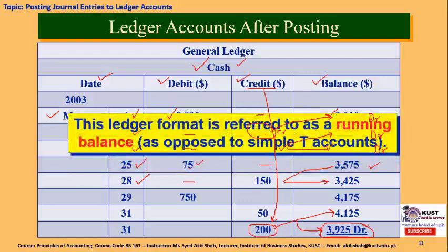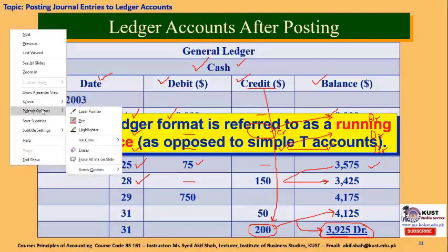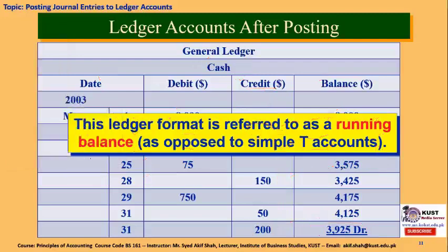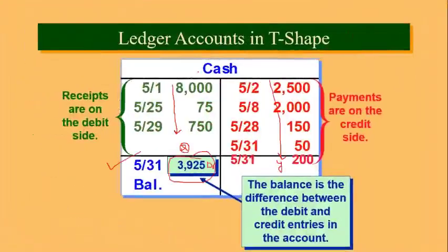This type of ledger format is referred to as the running balance format for making the ledger account, as opposed to the T-account. We have two options: either make the ledger using the running balance format method, or use the T-shape to make our ledger accounts.